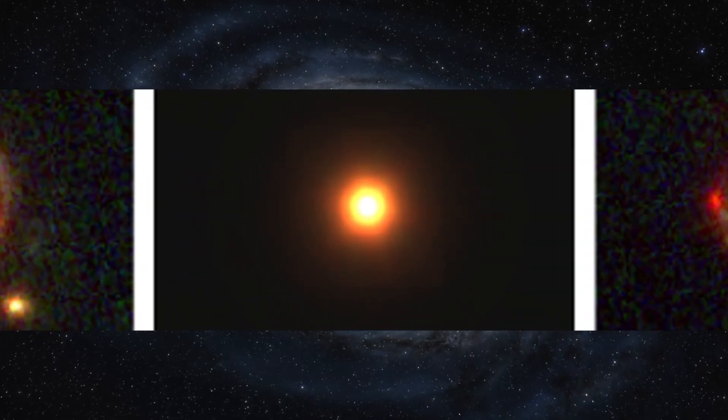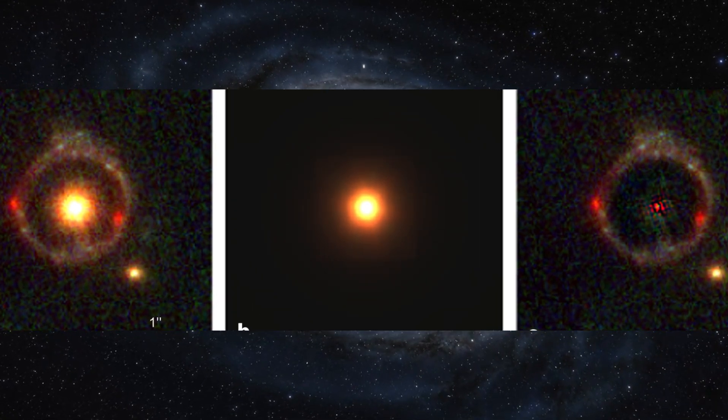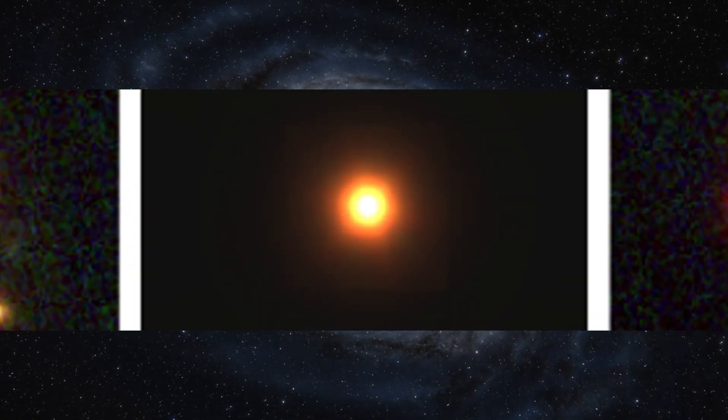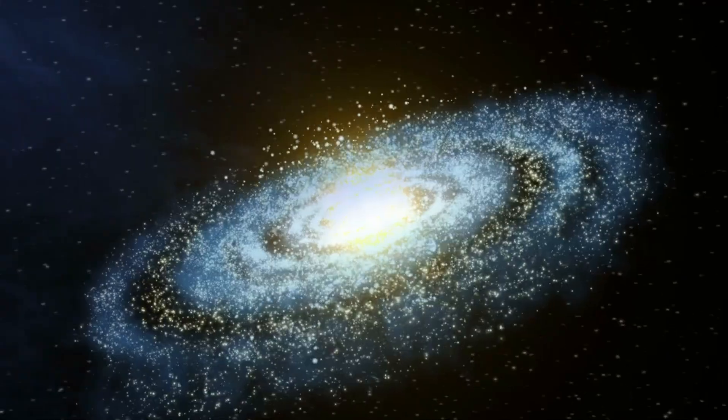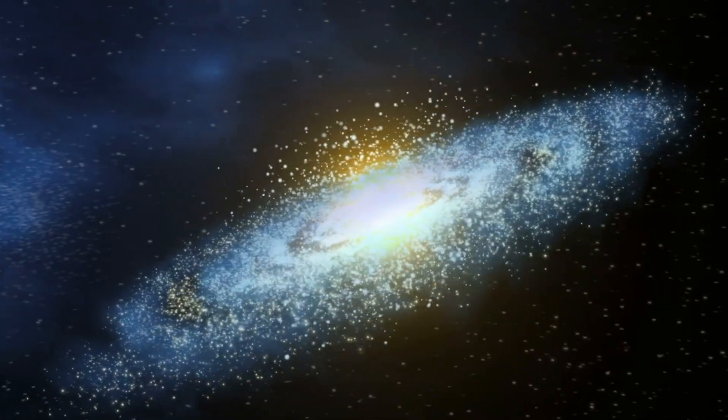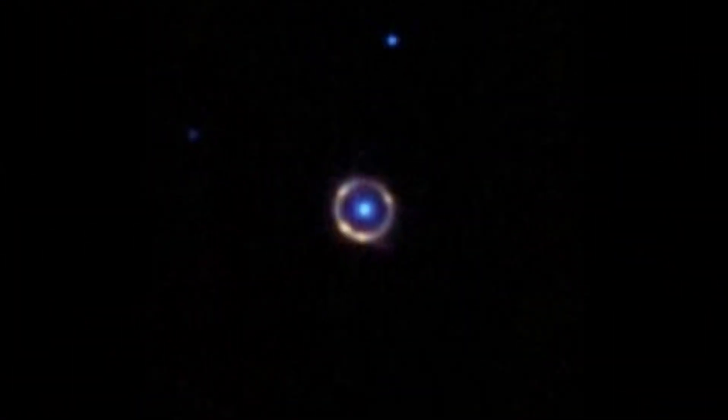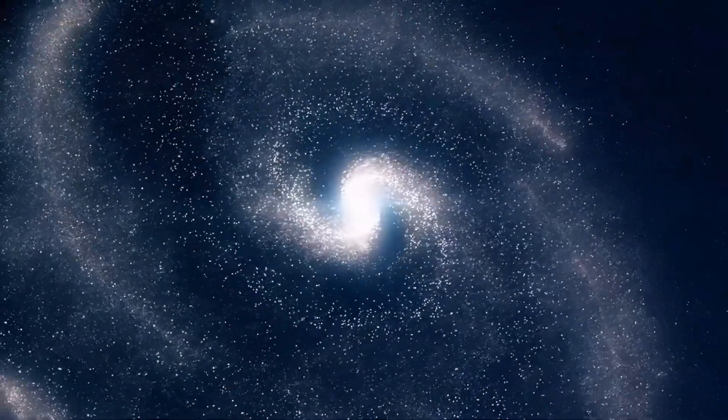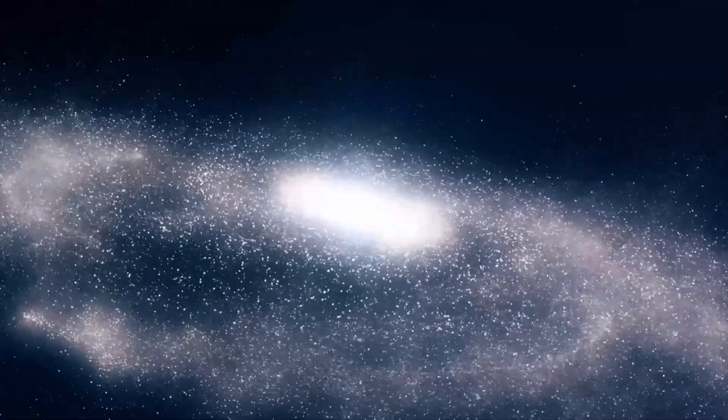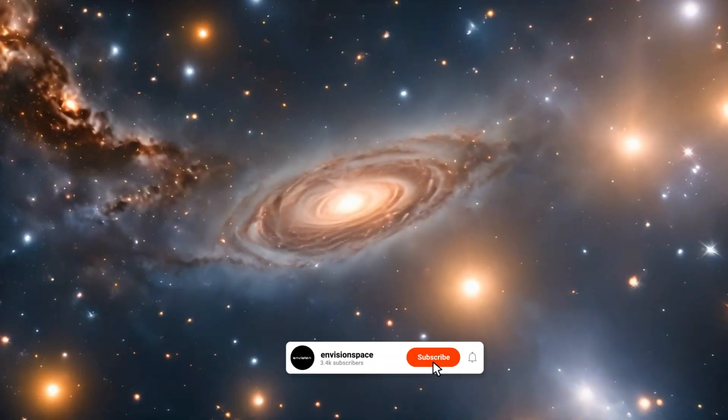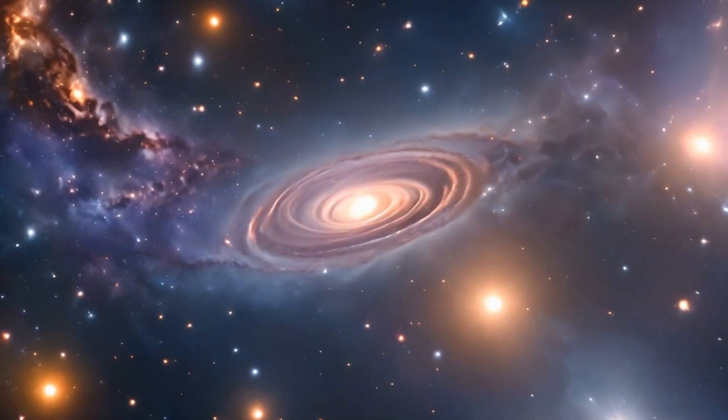The discovery is particularly intriguing because of the completeness and symmetry of the Einstein ring. Most Einstein rings are not complete, and their analysis can be hampered by asymmetries and irregularities. However, this galaxy's ring is almost perfectly circular, indicating an almost direct alignment between the observer on Earth, the lensing galaxy, and the background galaxy. This alignment not only confirms the theoretical predictions about gravitational lensing but also enhances the precision with which astronomers can measure the mass of the lensing galaxy.